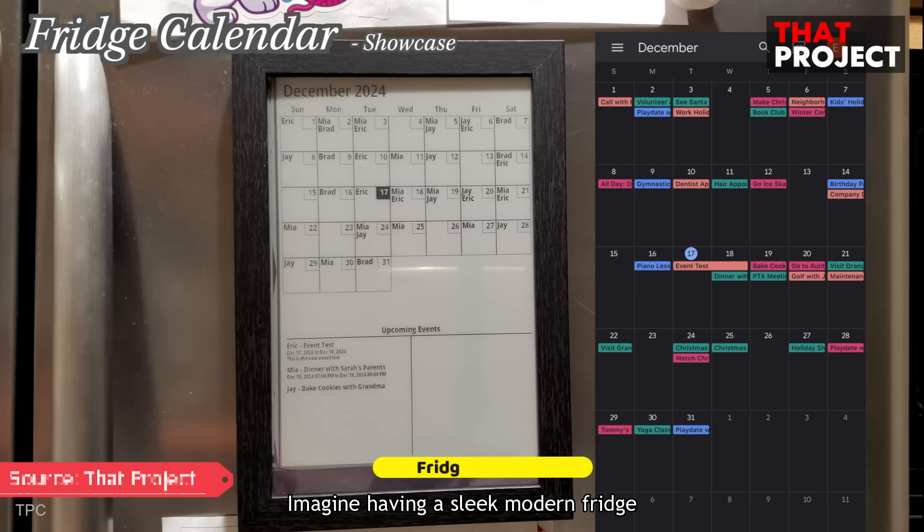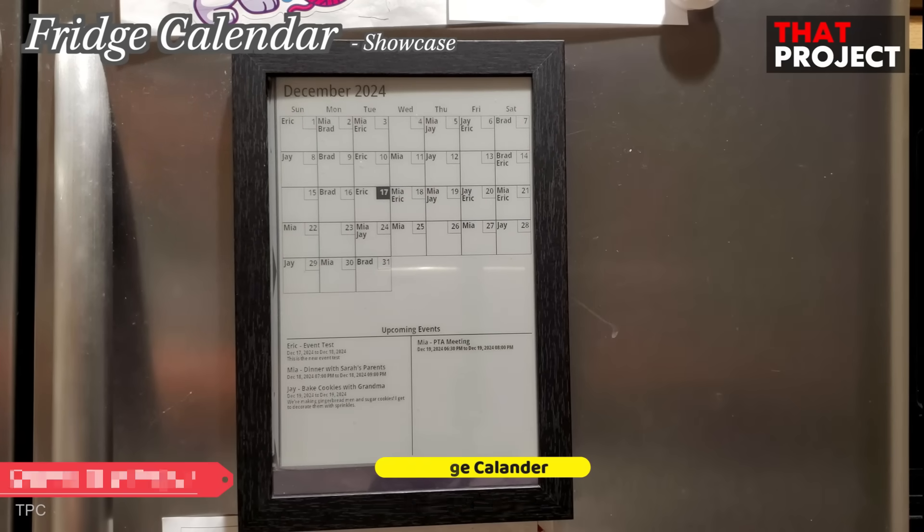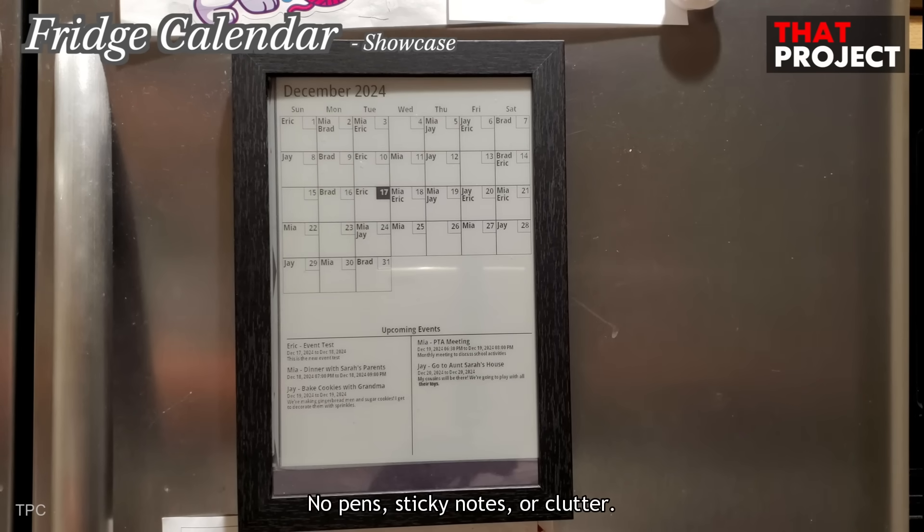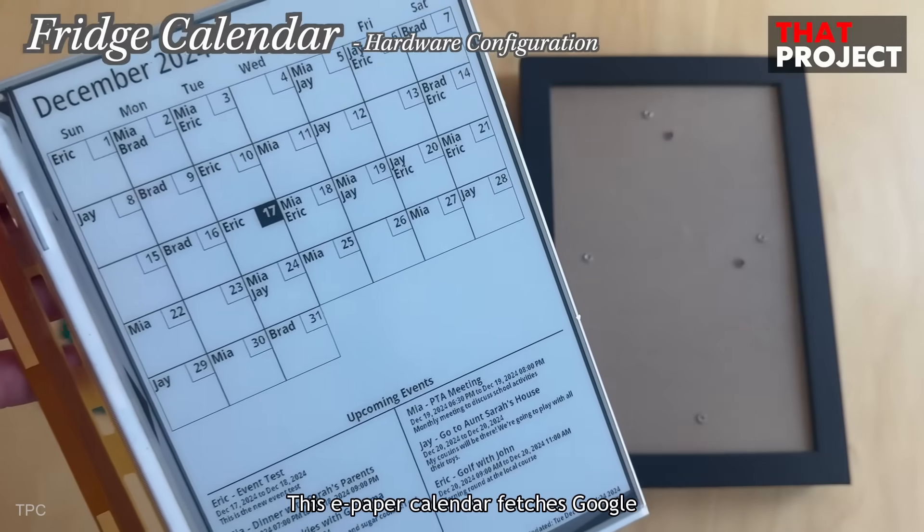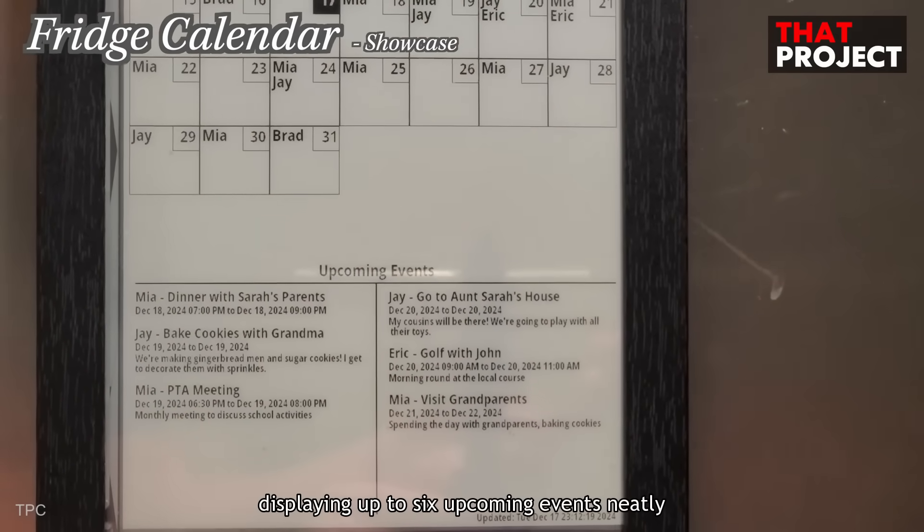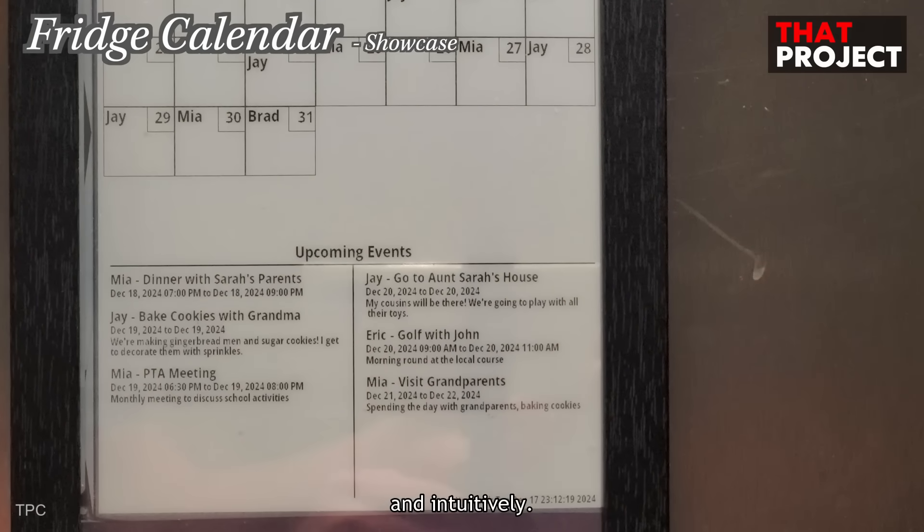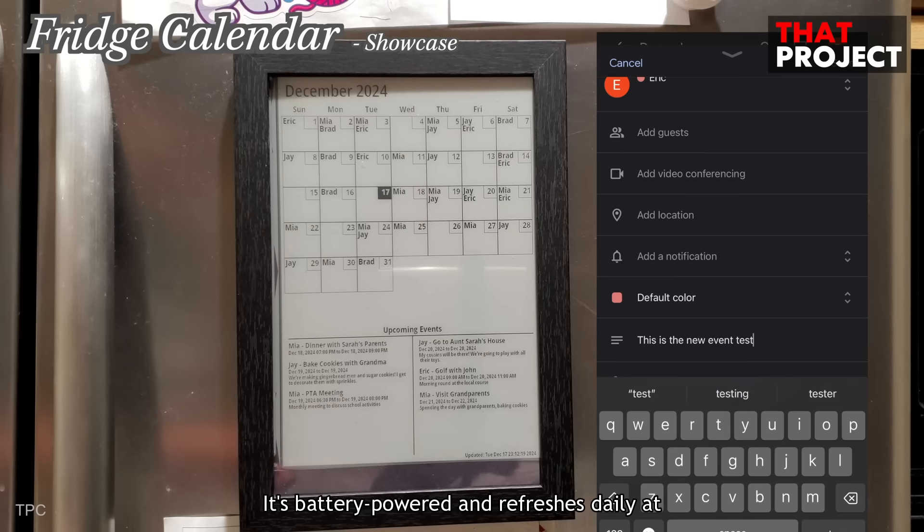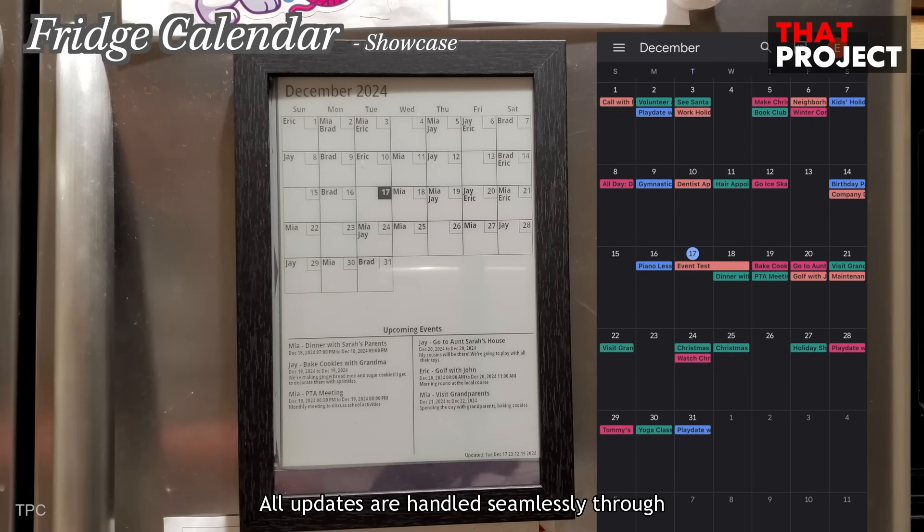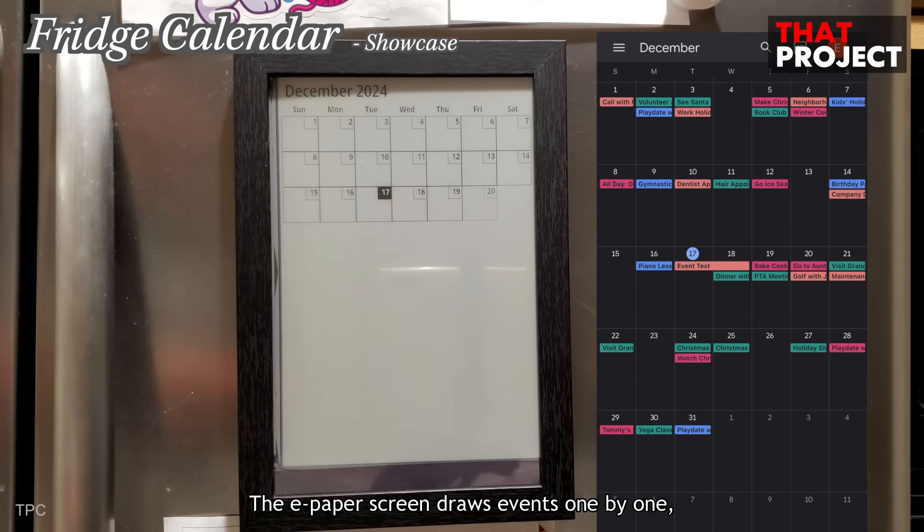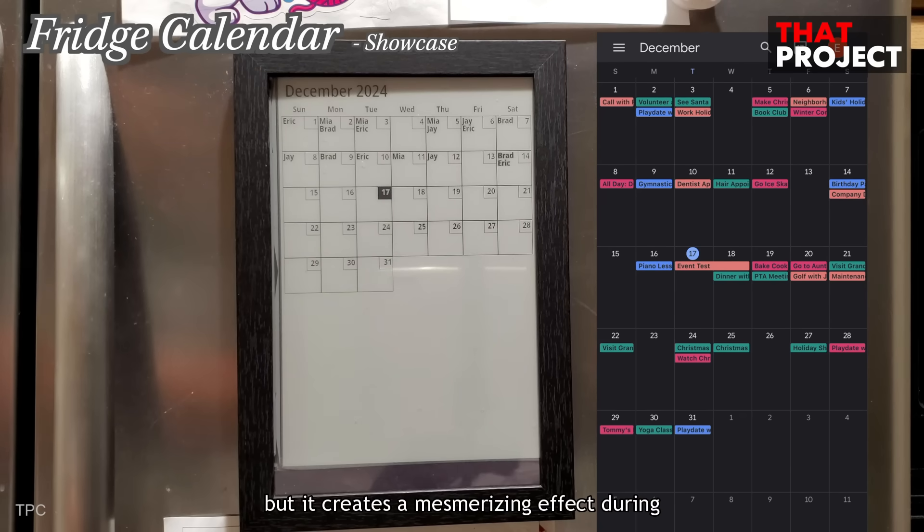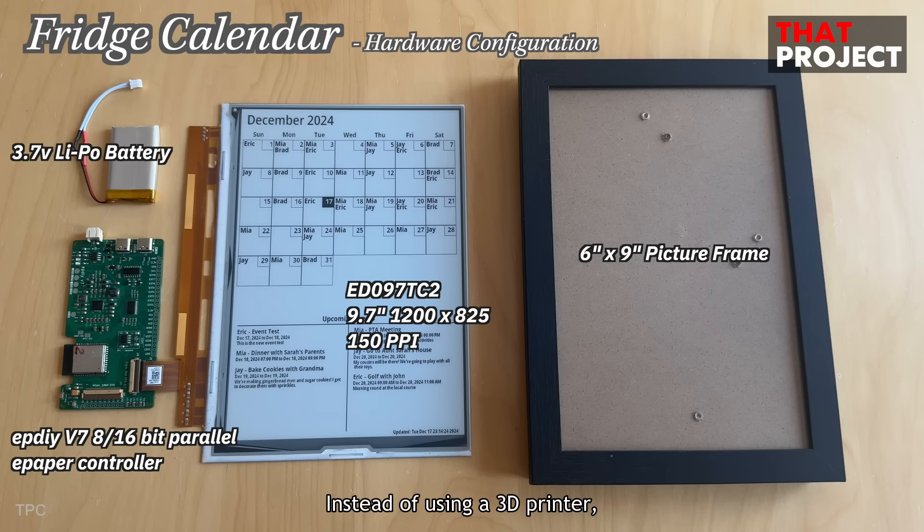Imagine having a sleek modern fridge calendar that syncs directly with your Google Calendar. No pens, sticky notes, or clutter. That's exactly what Eric has built. This ePaper calendar fetches Google Calendar data, displaying up to six upcoming events neatly and intuitively. It's battery-powered and refreshes daily at midnight to keep everything up to date. All updates are handled seamlessly through the Google Calendar app. The ePaper screen draws events one by one, which may take longer, but it creates a mesmerizing effect during updates. Instead of using a 3D printer, Eric repurposed an old picture frame for the housing.